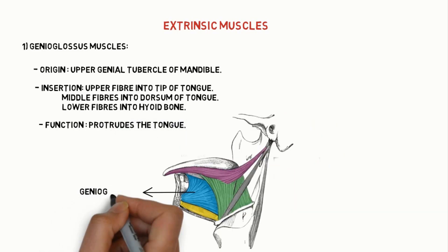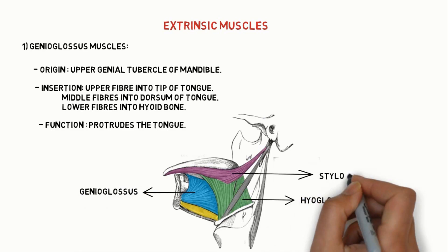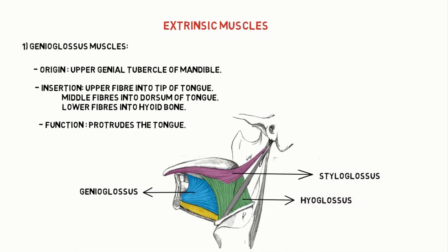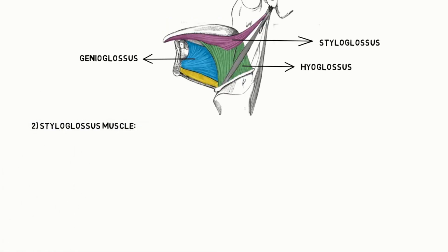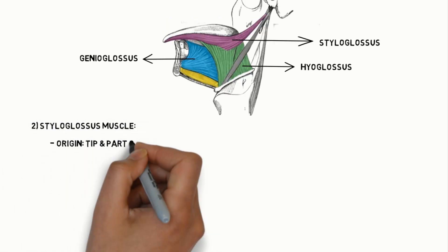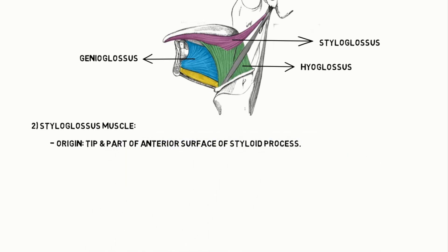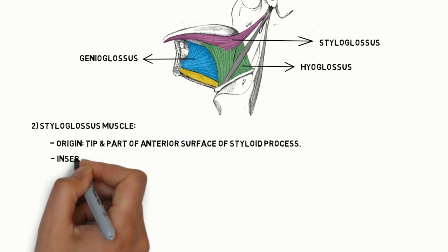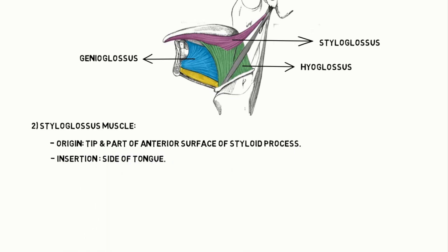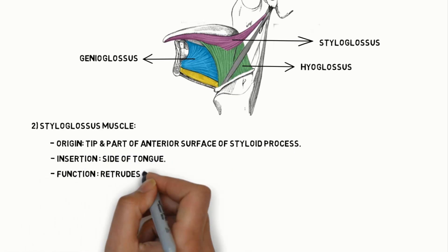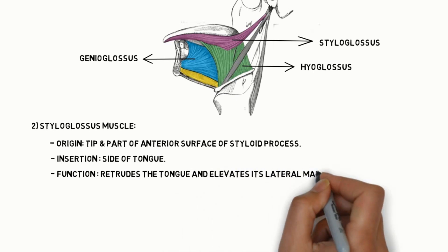Here is the image of the extrinsic muscles, showing the genioglossus, hyoglossus, and styloglossus. Coming to the styloglossus muscle, it originates from the tip and anterior surface of the styloid process — that is why it is called the styloglossus muscle. Insertion: side of the tongue.